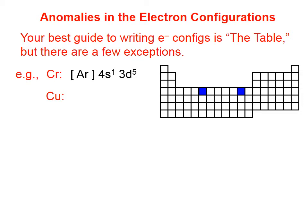The same thing happens with copper. If we use the pattern from the table, copper's electron configuration should end with 4s2, 3d9 — that's 11 electrons. But it doesn't. It also has only a single valence S electron, just like chromium.